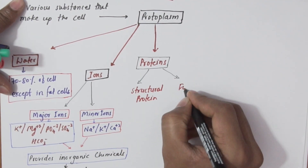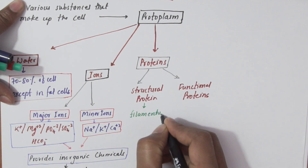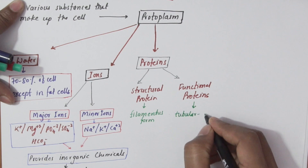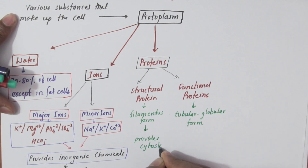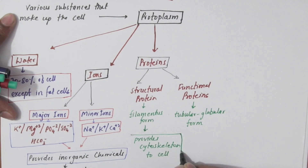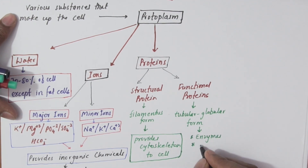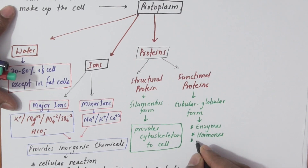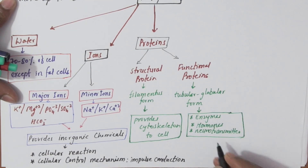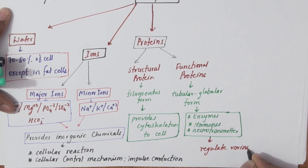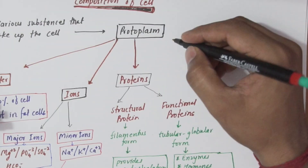Proteins may be structural or functional. Structural proteins are in the form of filaments and provide the cytoskeleton to the cell. Functional proteins in tubular and globular forms are used as enzymes, hormones, neurotransmitters, and receptors, and regulate various metabolic reactions occurring in the cell.